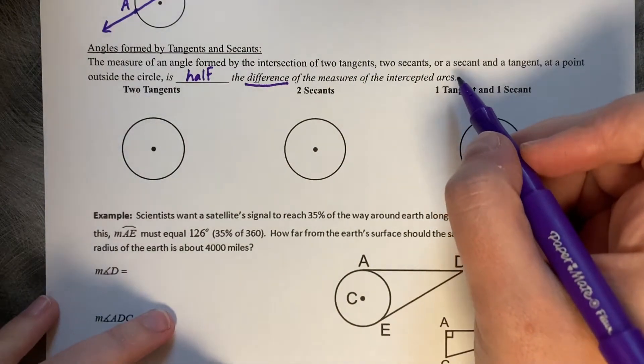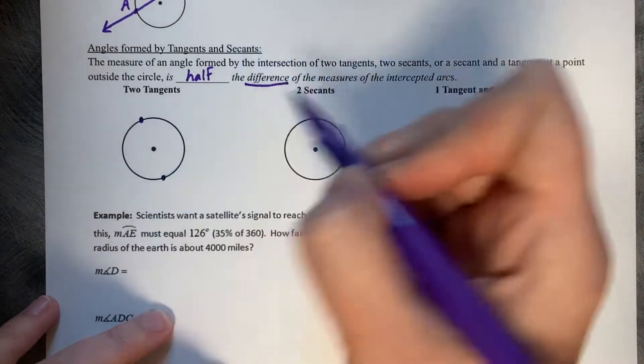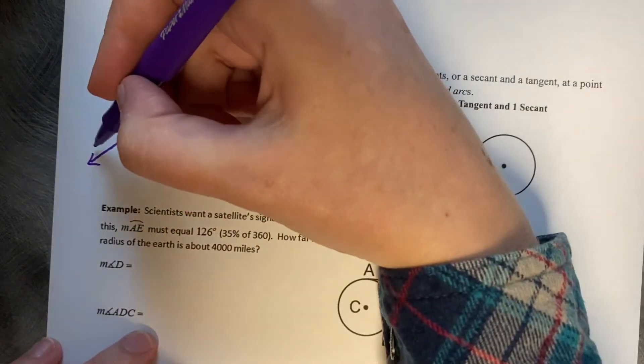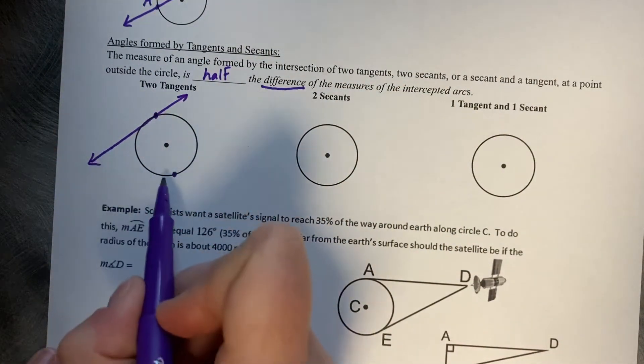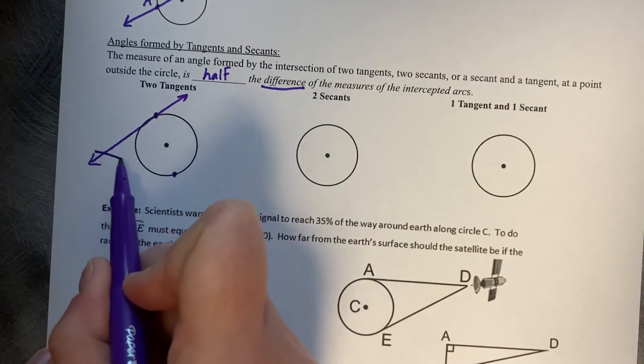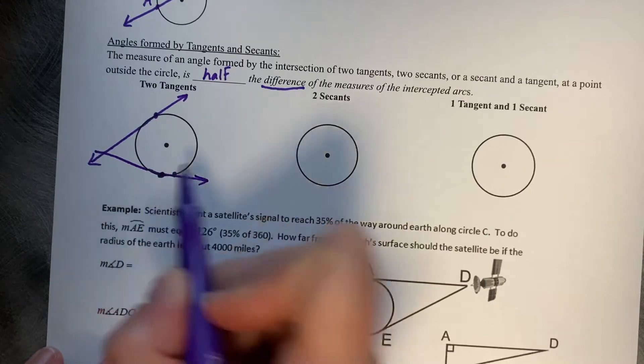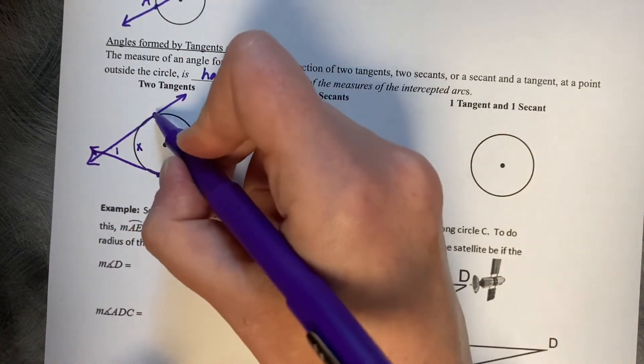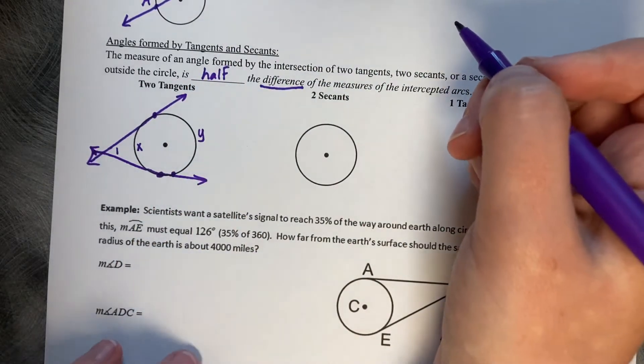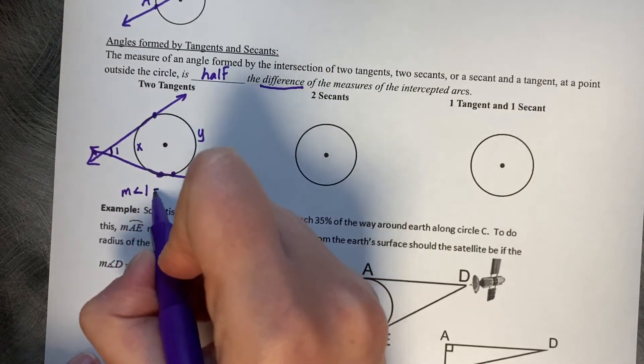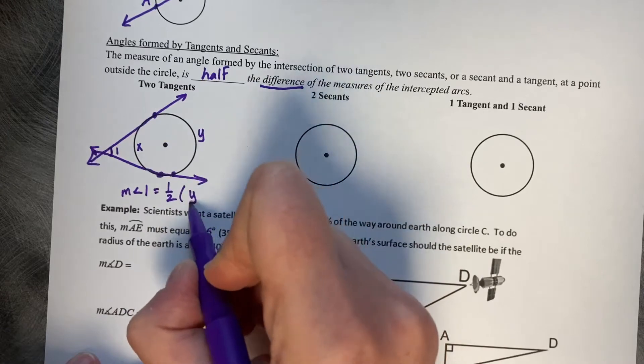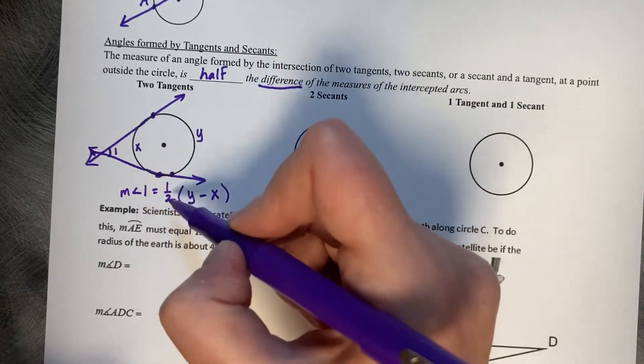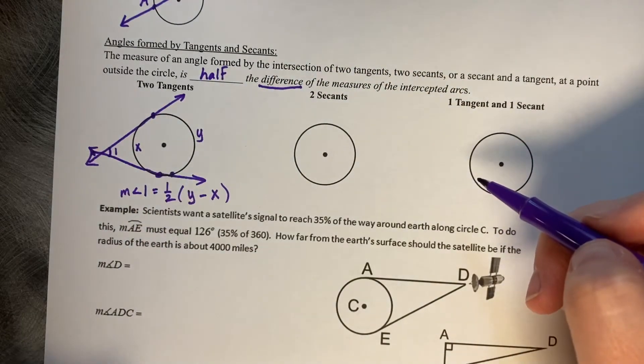So, we're going to draw a picture to show this. First, I'm going to do two tangents. If this is angle number one, this arc I'm going to call X, and this outer arc I'm going to call Y. Mathematically, if we want the measure of angle one, we would do one half the big minus the small. So, Y minus X in this case. So this Y arc minus this X arc in half is equal to the measure of angle number one, the intersection angle.